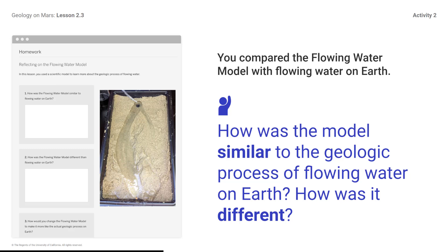You compared the flowing water model with flowing water on Earth. How was the model similar to the geologic processes of flowing water on Earth? How was it different? You might respond that flowing water formed landforms that remained after the water stopped flowing. The flowing water model only contains sand, but the Earth's geosphere contains many other different types of materials.